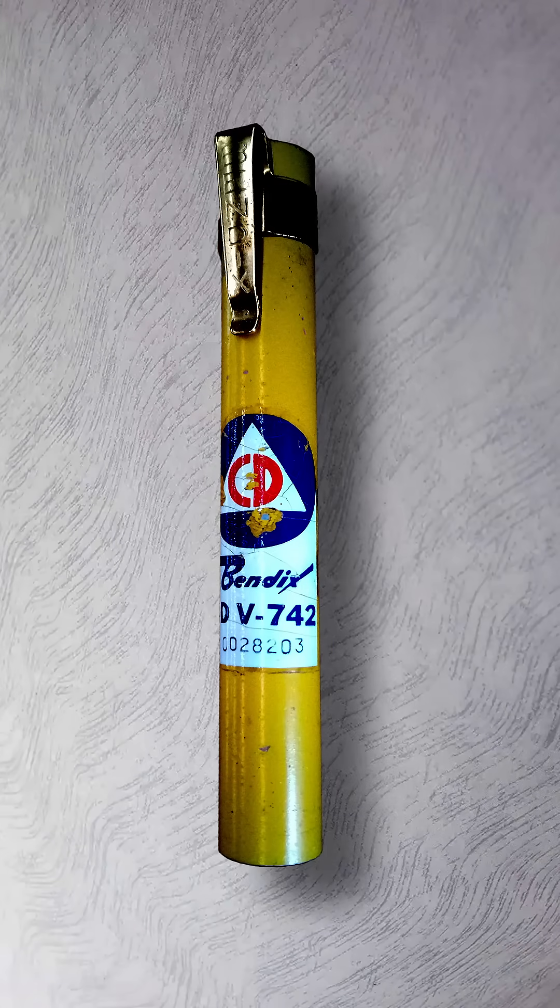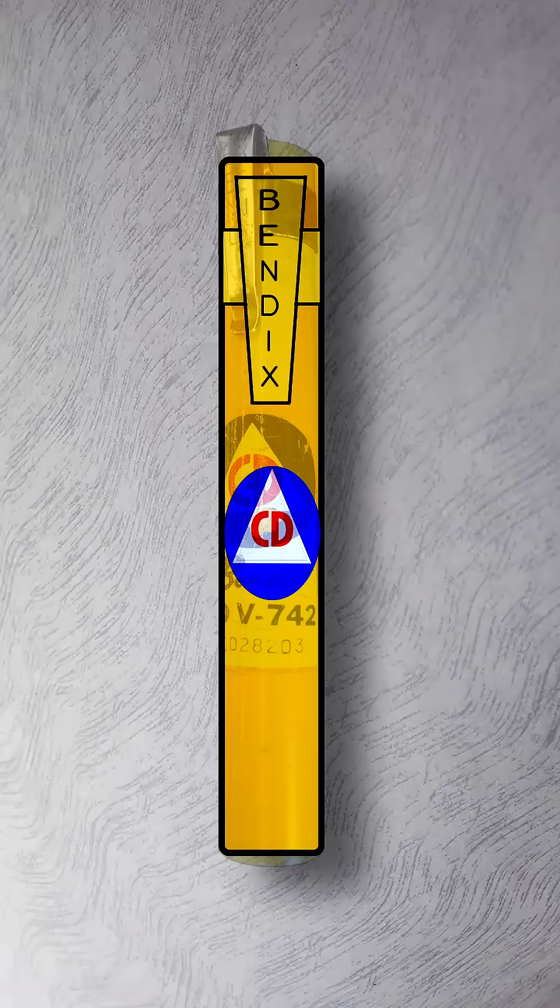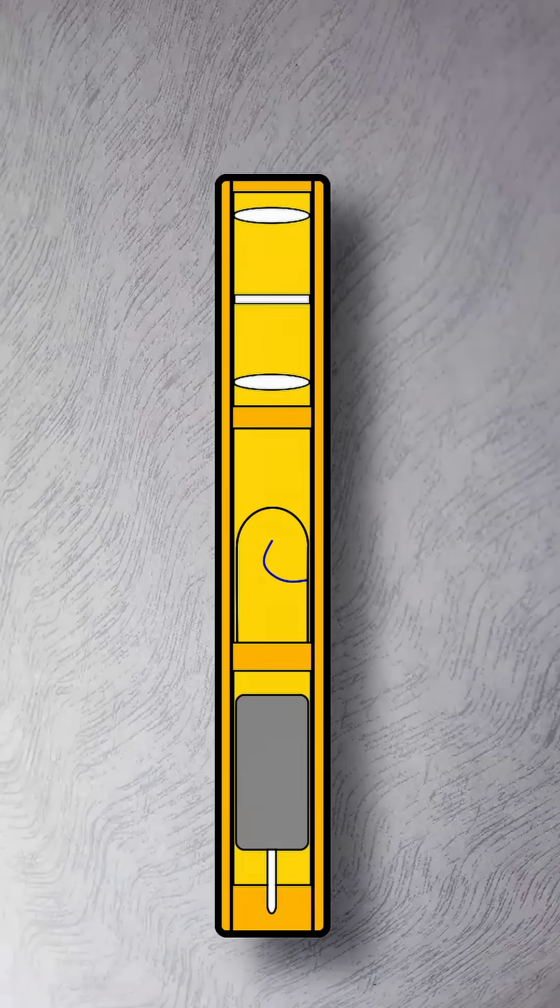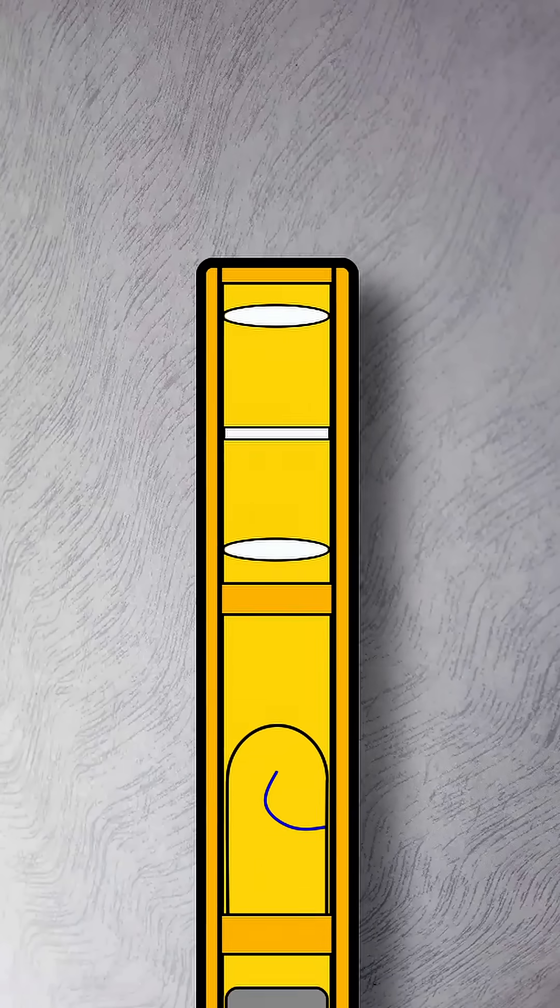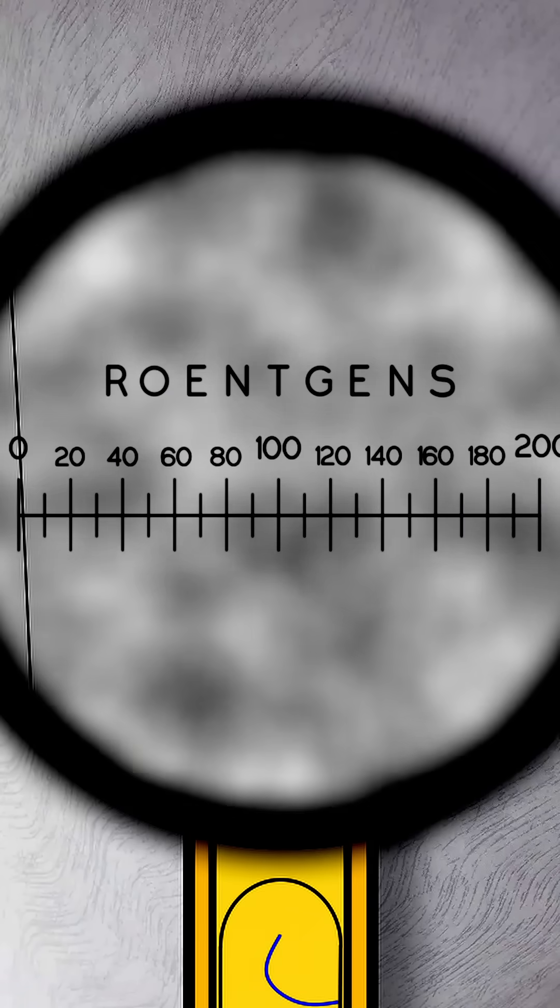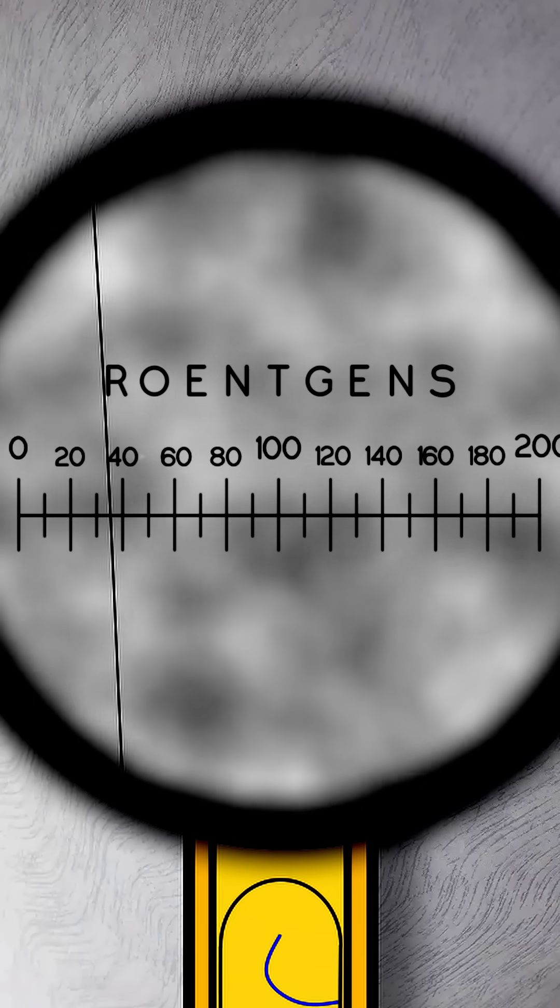The Civil Defense Dosimeter was a device used to measure radiation exposure over time. It's constructed of a pen-sized metal tube with three modules inside. The first module contains the viewfinder lenses. This is the part that you would look into to read your reading.